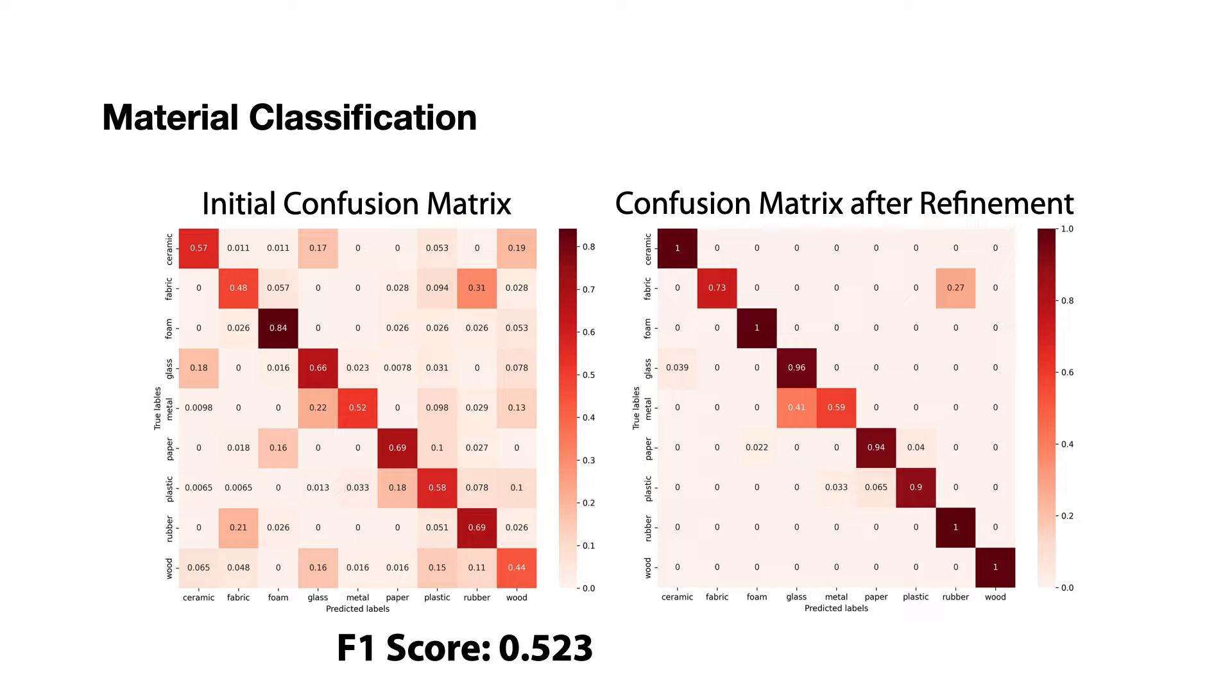However, we observed object materials are relatively uniform and smooth around local regions. Based on this assumption, we can iteratively refine our prediction. Our final average F1 score reaches 0.763.